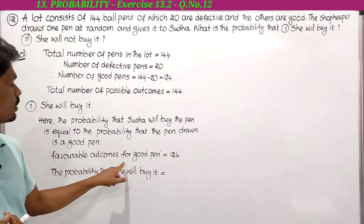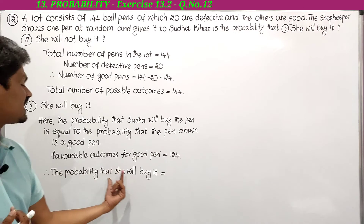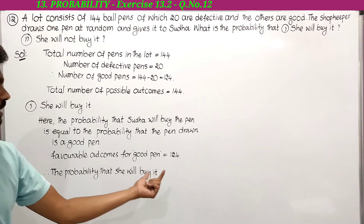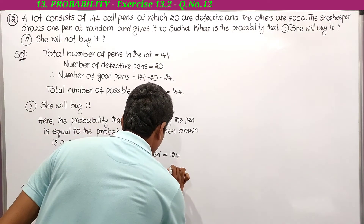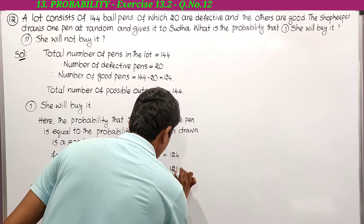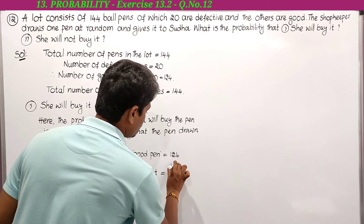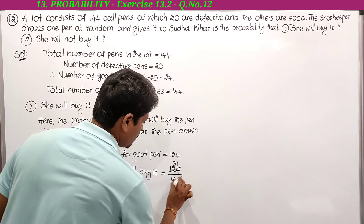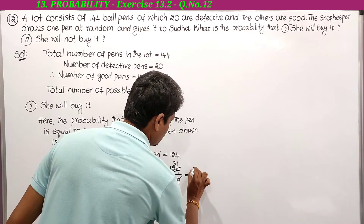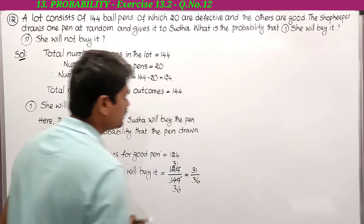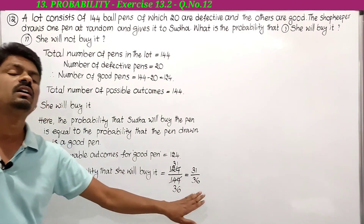The favorable outcomes for a good pen equal 124. Therefore the probability that she will buy it = favorable outcomes / total possible outcomes = 124/144. Since 4 is a common factor, this simplifies to 31/36. So the probability that Suda will buy the pen is 31/36.